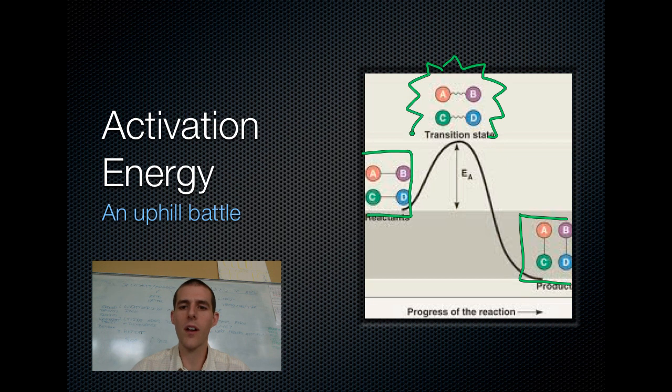Something to note before we start talking about this: in our reactants, A is bonded to B and C is bonded to D. In the products, A to C, B to D. So what activation energy is, is it's the energy that is needed to take our reactants and move them to a place called the transition state where their bonds are stressed out enough that the atoms want to leave each other and join up with other atoms.